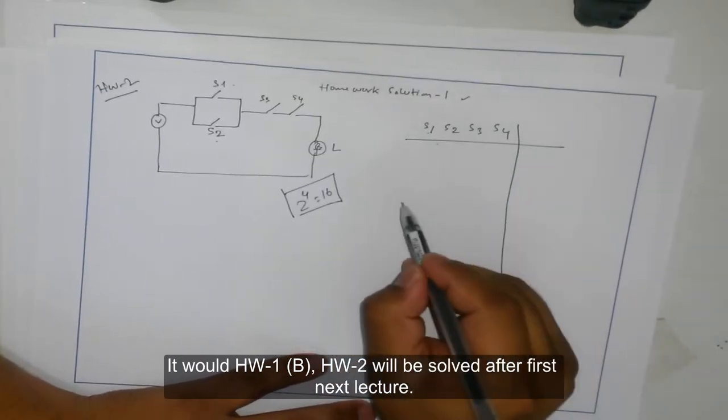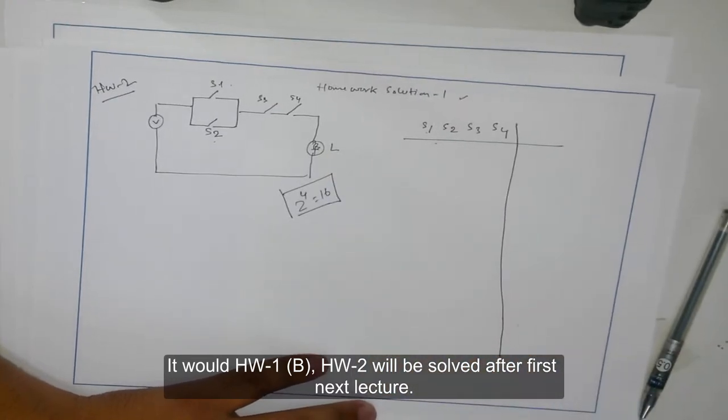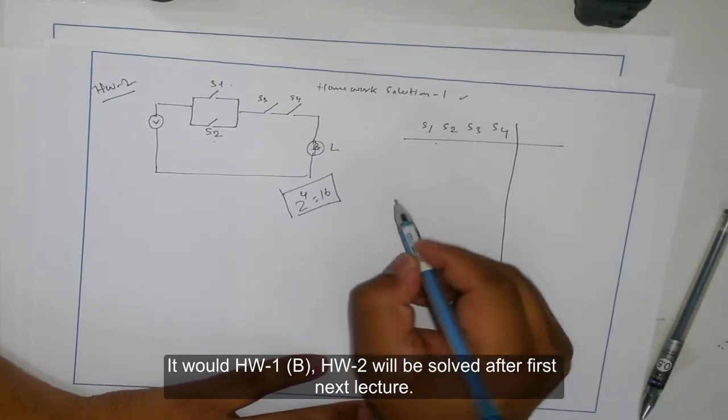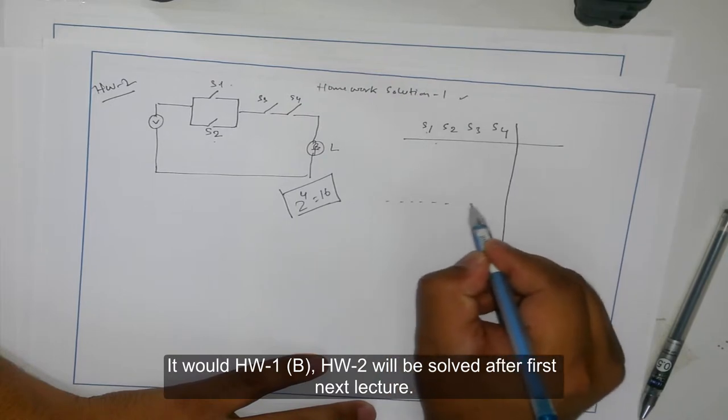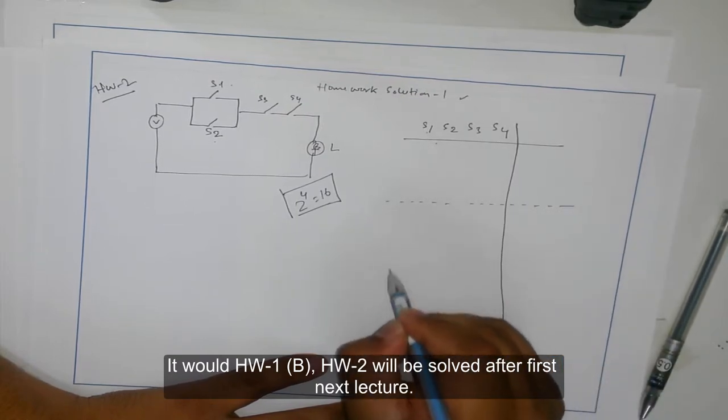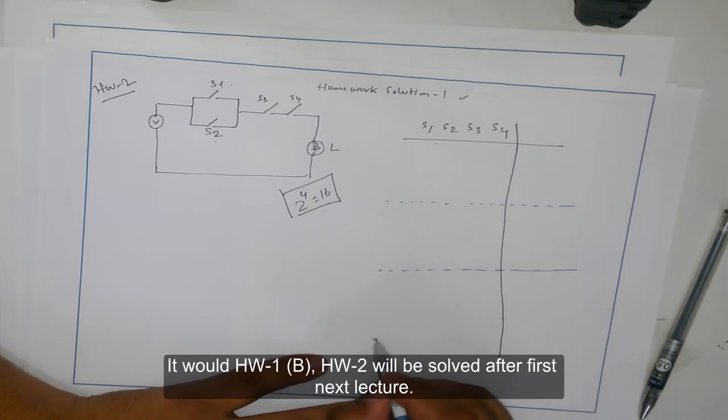So what I do is when I have more combinations, I actually make divisions so that I don't make mistakes. Since there are four, that's what I do.